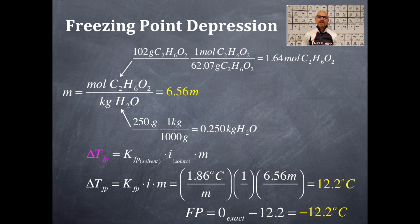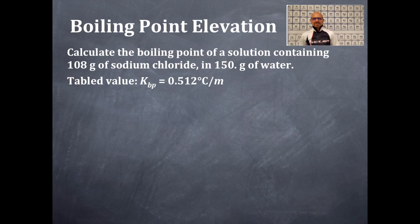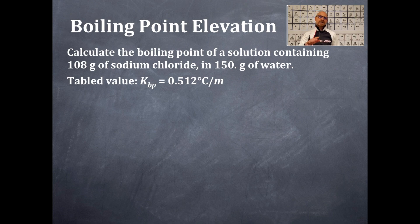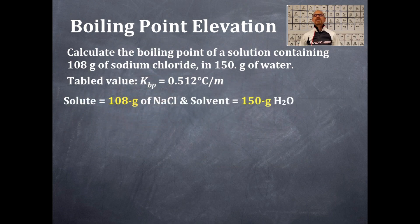Let's do a boiling point elevation problem. We're going to calculate the boiling point of a solution containing 108 grams of sodium chloride and 150 grams of water. The tabled value for the constant for the boiling point is 0.512 degrees Celsius per molal. Again, we need to figure out what the solute is and what the solvent is. Comparing 108 and 150: the least is the solute, the most is the solvent — so 108 grams of sodium chloride is the solute and 150 grams of water is the solvent.